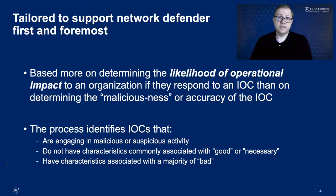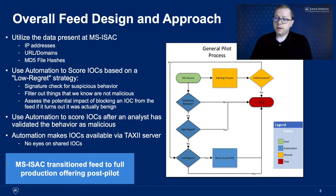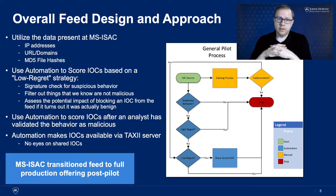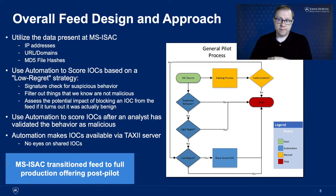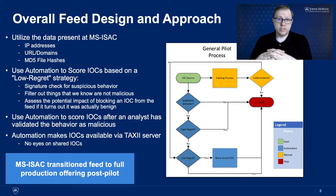This process is focused on identifying indicators that are engaging in suspicious activity but do not have the characteristics associated with good or necessary capabilities that your organization uses. So we'll take our IOC source, see if it is exhibiting some suspicious behavior. When I talk about the IOCs, I'm talking about things like IP addresses, URLs, domains, MD5 file hashes — things that you may have extracted from various sources, sensors, etc.